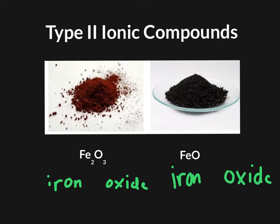If you take a look at the two substances, they're clearly two different colors. And the formulas, while they have both iron and oxygen in them, they have them in two different ratios. So there's something going on here with our transition metals.